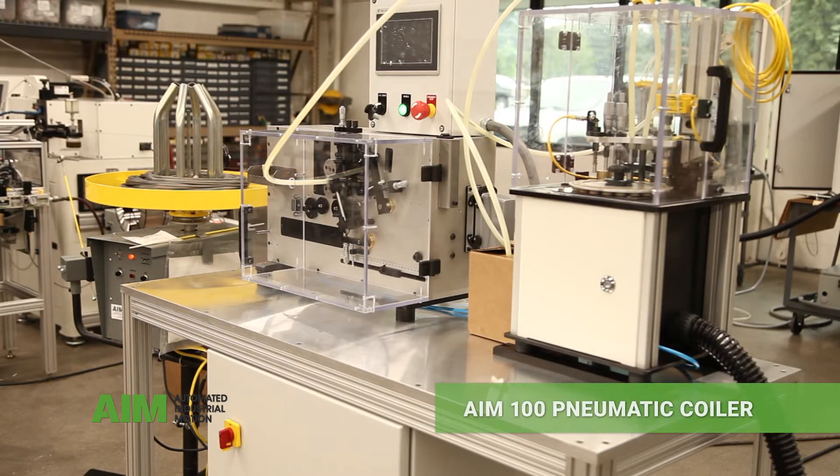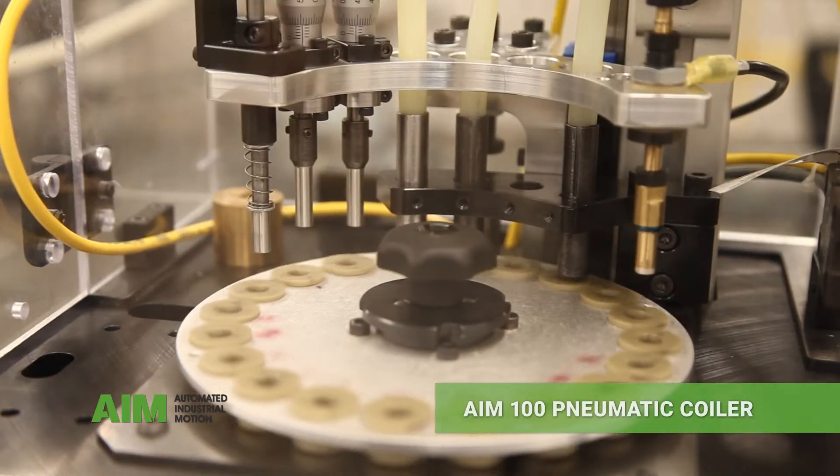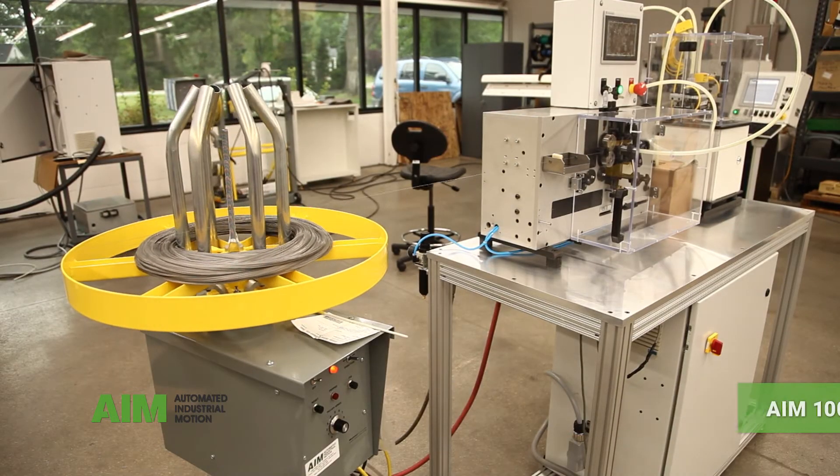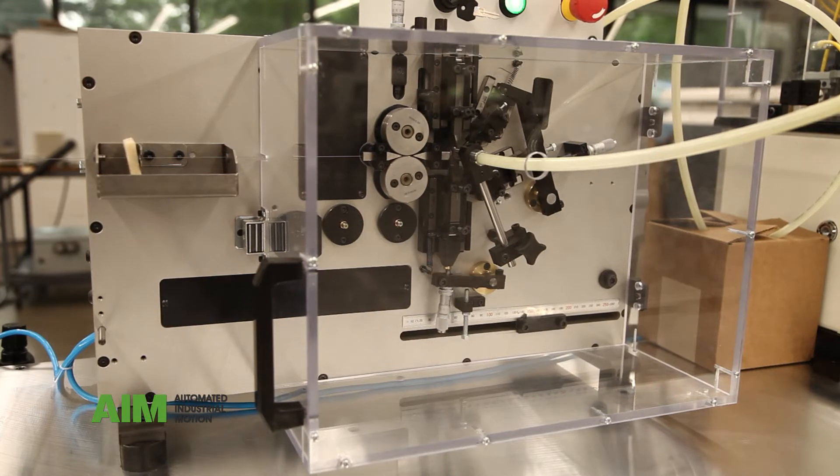This is the AIM-100 pneumatic coiler equipped with a spring stress relief system. This coiler setup is for specific on-demand production of springs. This particular example is producing springs for a solenoid valve application.